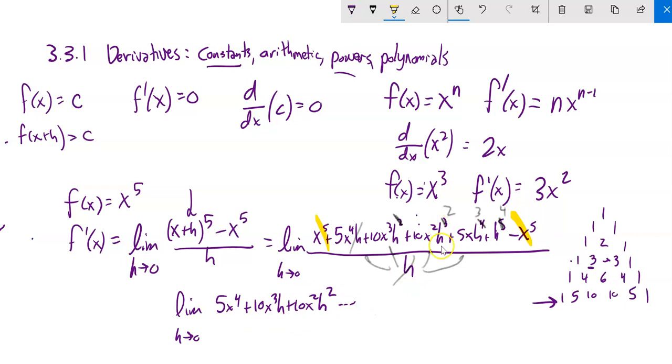h is going to run to 0. All these things that have h's in them go to 0. So I'm left with 5x to the 4th, which if we just go back to our relationship, that's what that would be according to that rule.